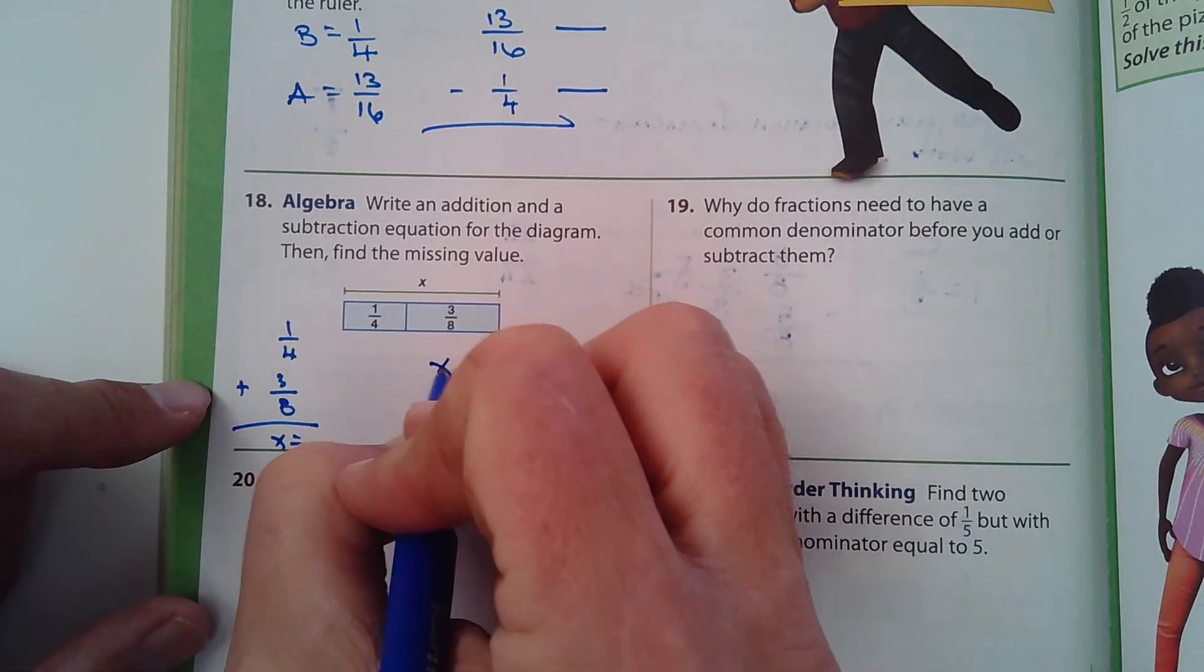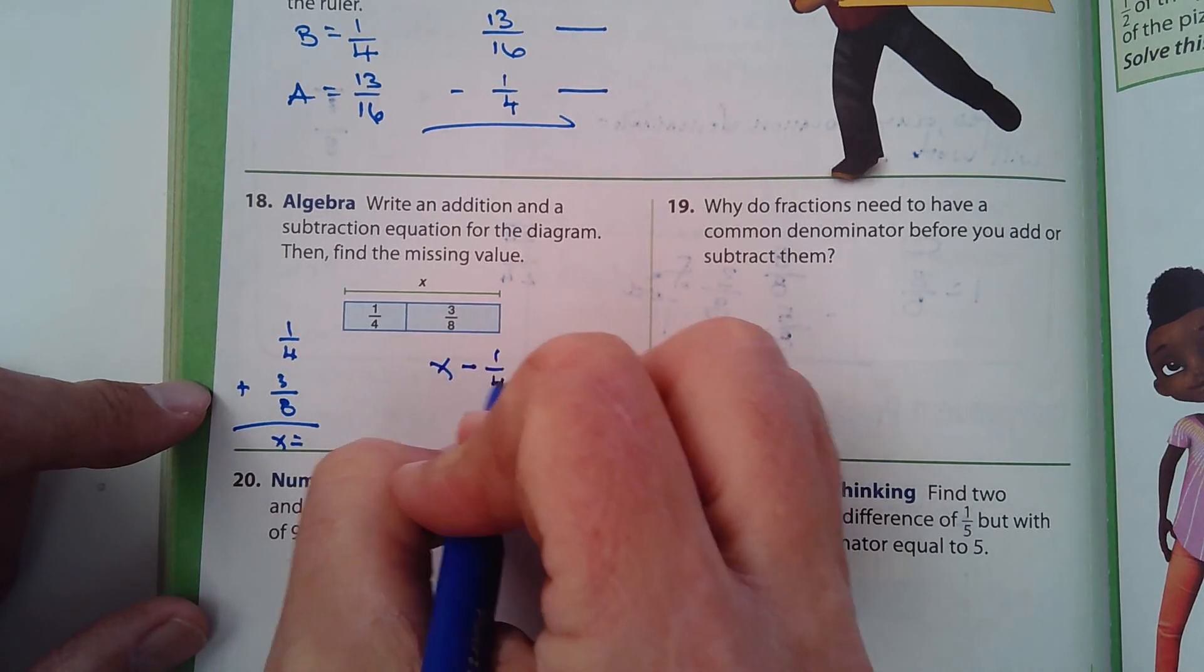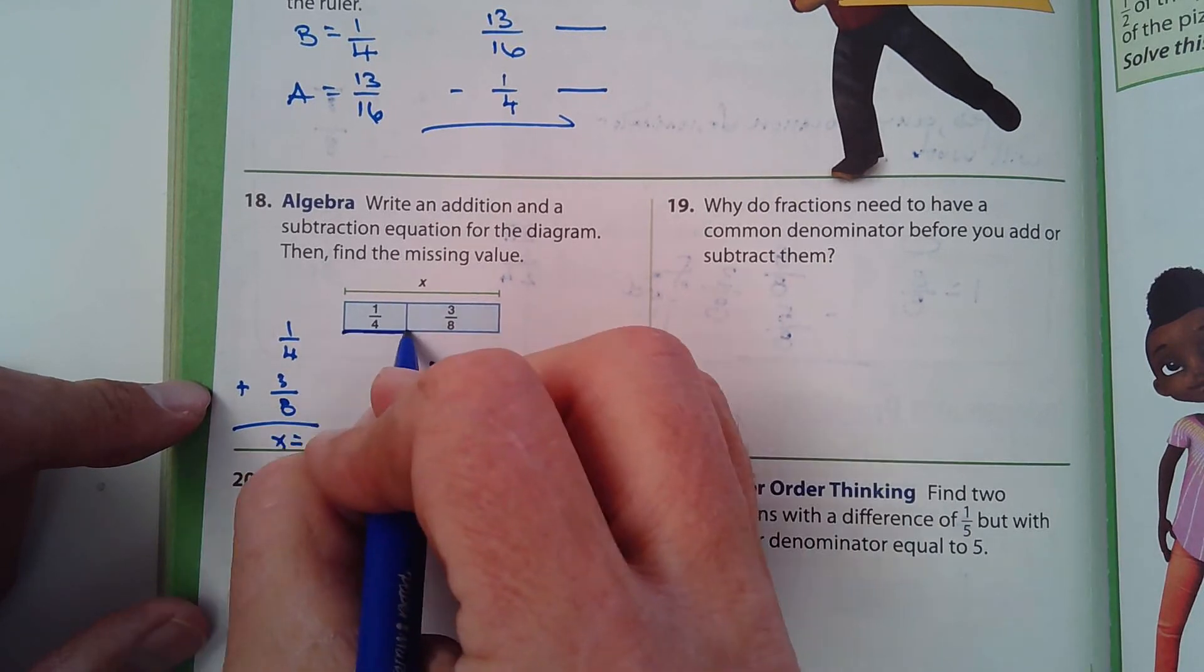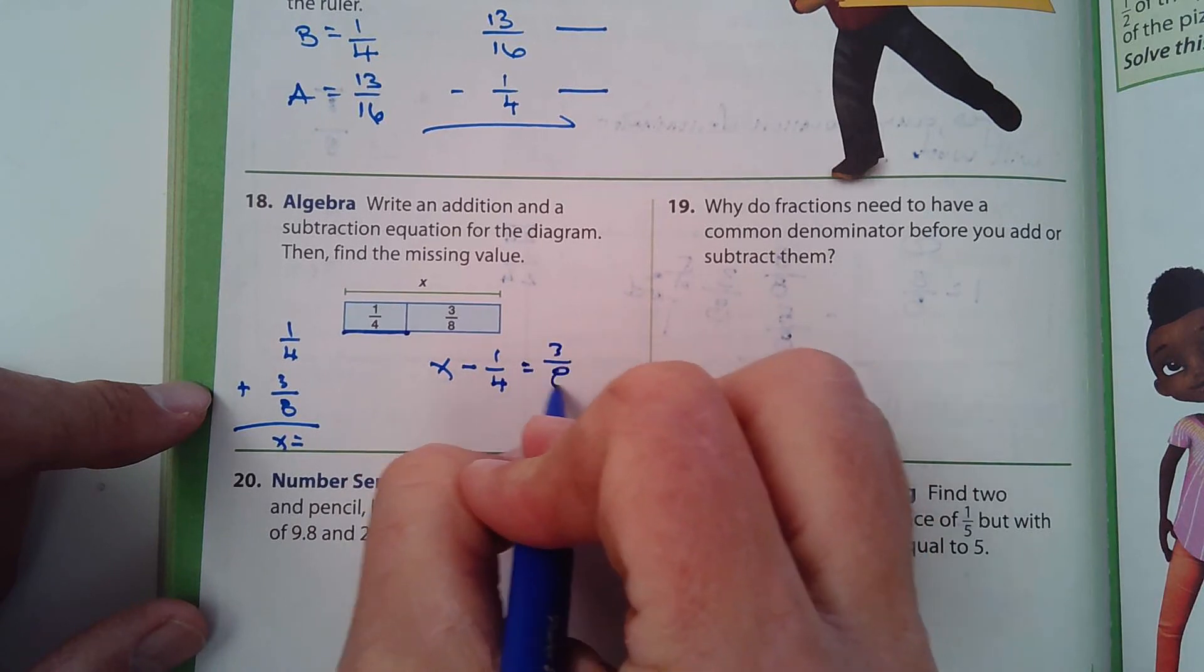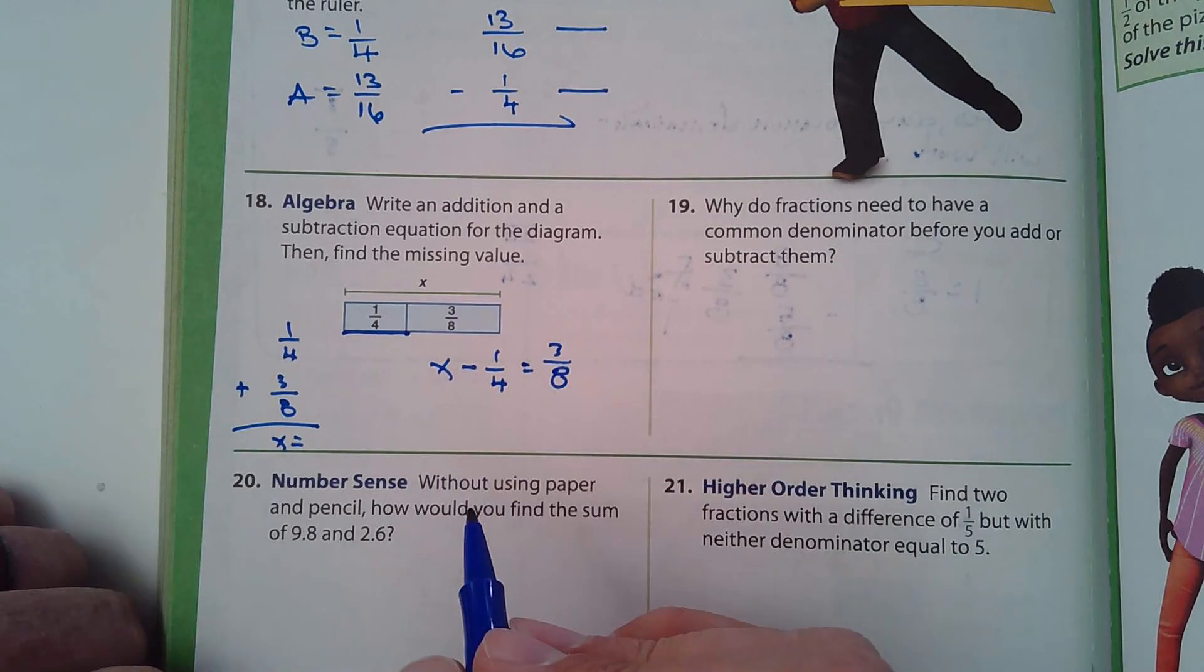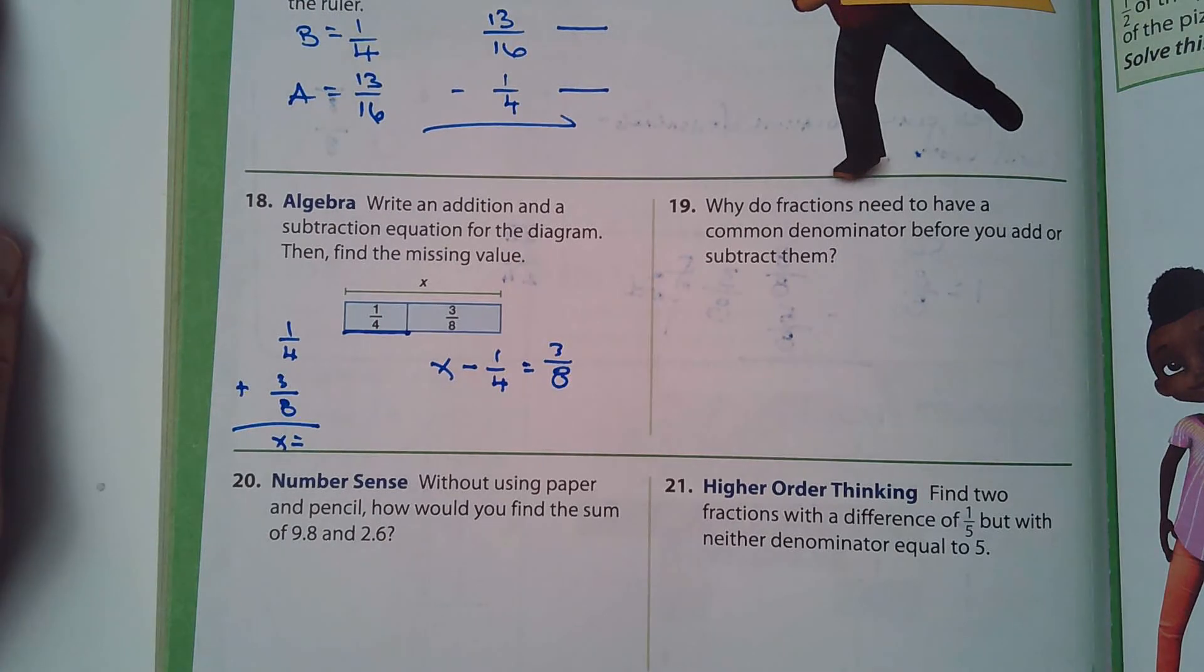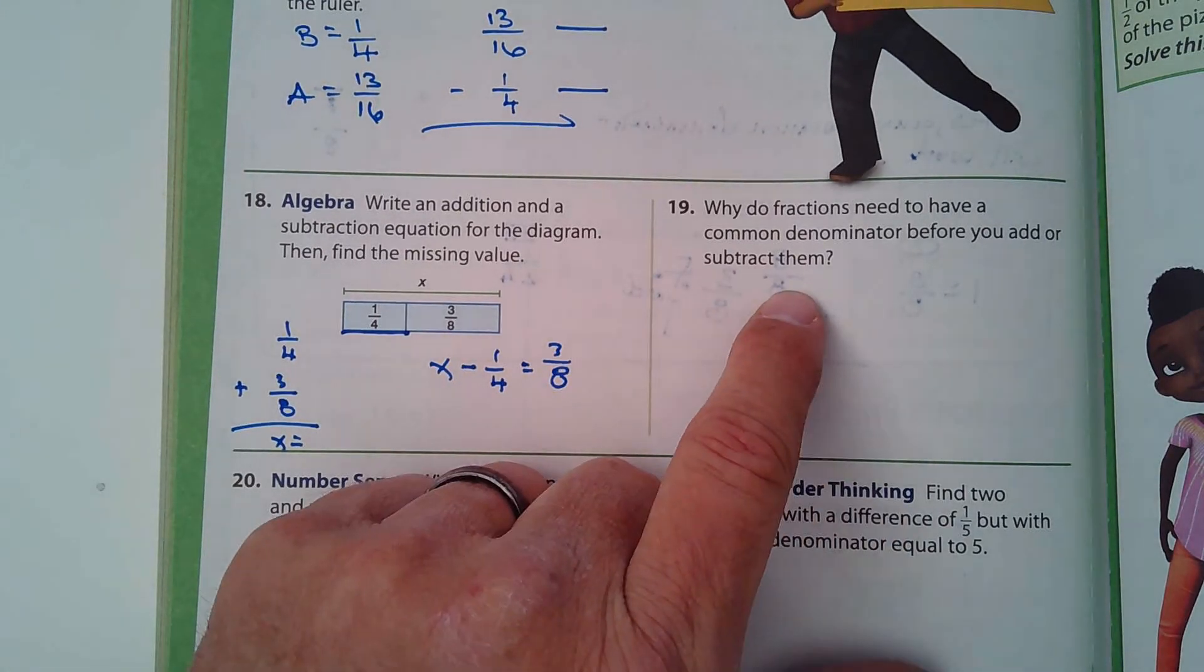And another one, another equation would be X minus one quarter. Because remember X is the full length. X minus this piece, this length right there equals three eighths. So once you find X, then you can plug that in.